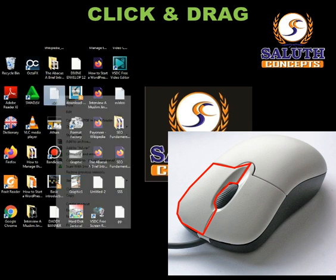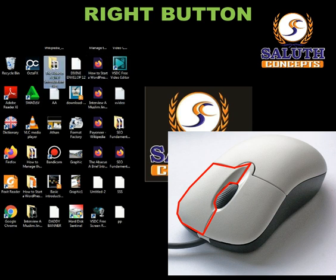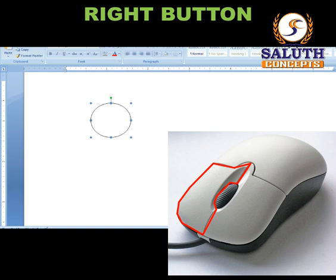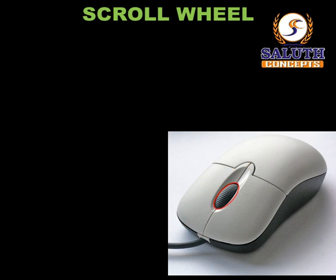Right button: used to get more options about a specified file, folder, or program. Scroll wheel: used to move a page up or down in programs such as MS Word, and also to zoom in or out in some programs. Play, pause, forward, and volume buttons are used to perform their designated functions when running a music or video application.